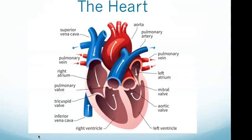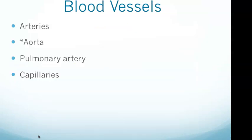The aorta carries blood away from your heart into the rest of your body — that answers question one. The pulmonary artery carries deoxygenated blood from the right ventricle to the lungs. Oxygenated blood leaves the heart via the aorta and travels through a network of arterioles to arrive at the capillary beds.